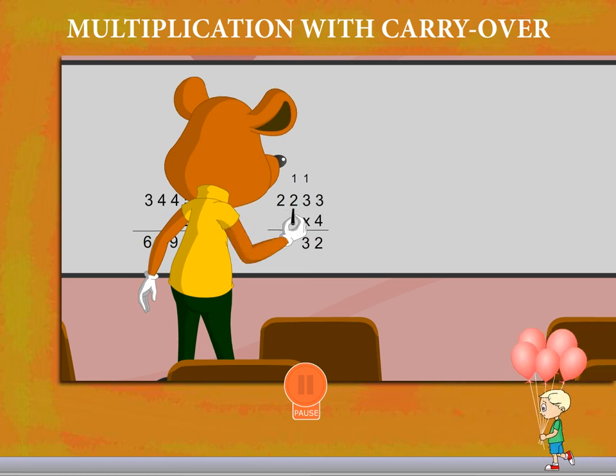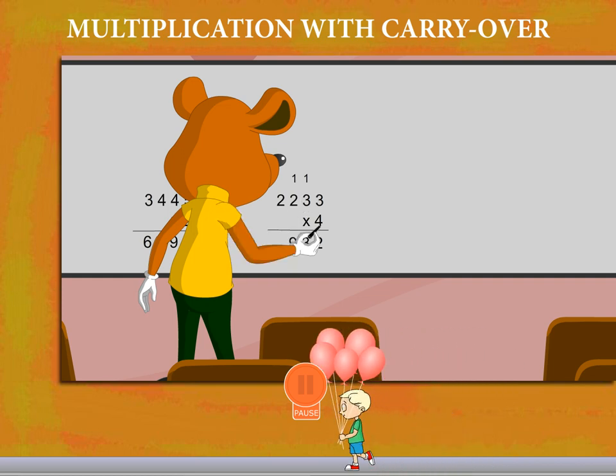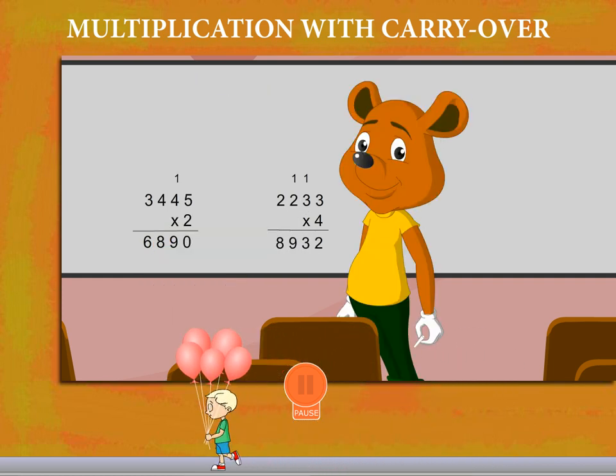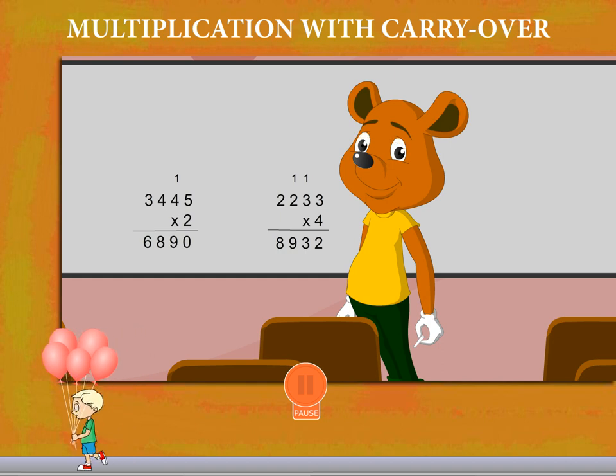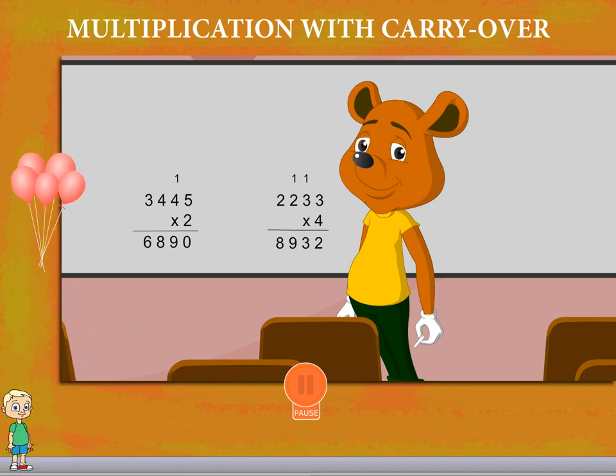Now, 4 into 2 plus the carryover is 9. And 4 into 2 is 8. Robbie gets the answer 8,932. Good going Robbie!